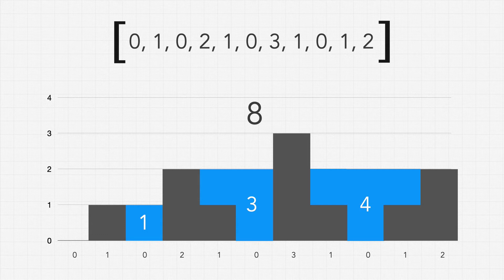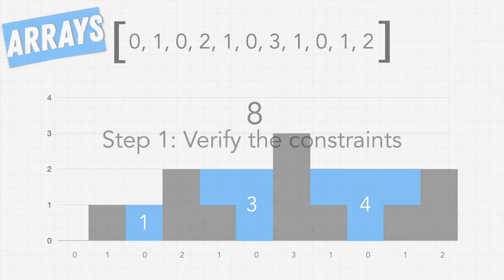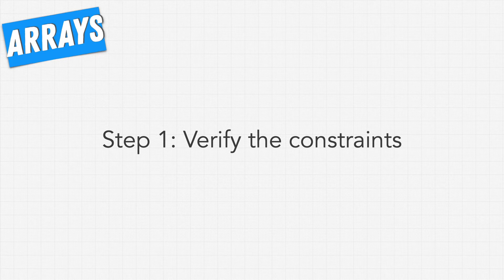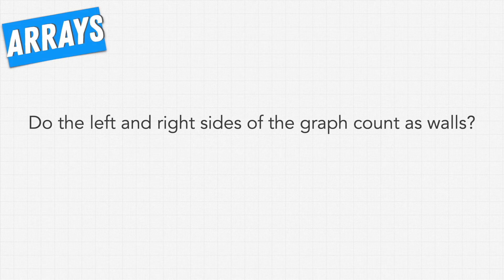So this question when we visualize it looks actually very simple, but when we actually have to solve this logically without some kind of visual aid it becomes more challenging. But the first step, as you know, we have to do is verify our constraints. This question is a little bit more clear so there's not as many constraints here, but it's still good to ask some. The first one we should ask is: do the left and right sides of the graph count as walls?